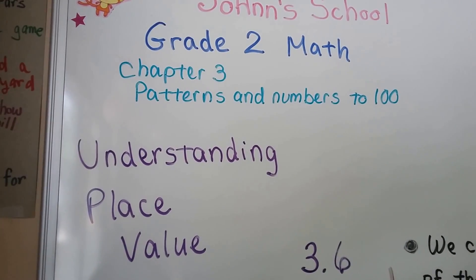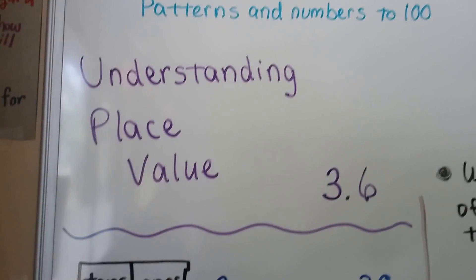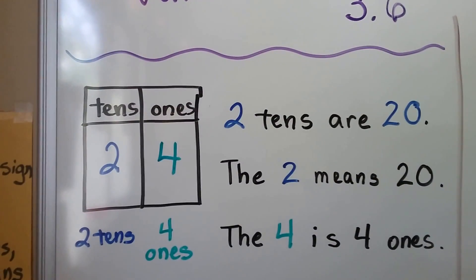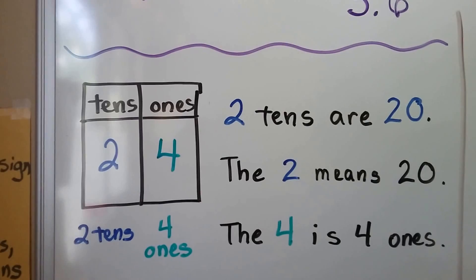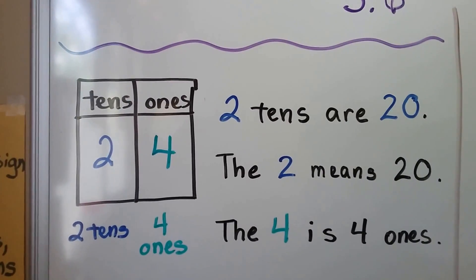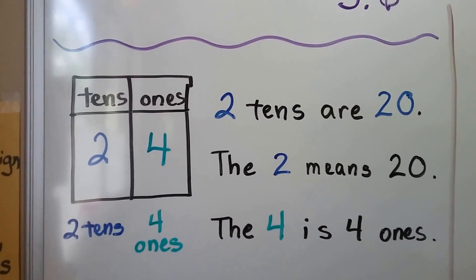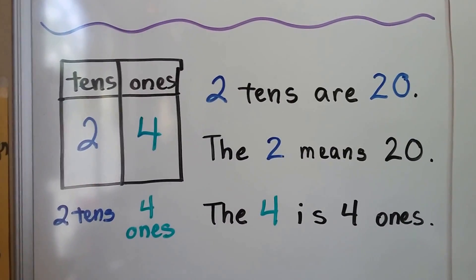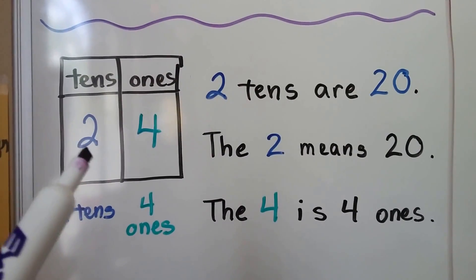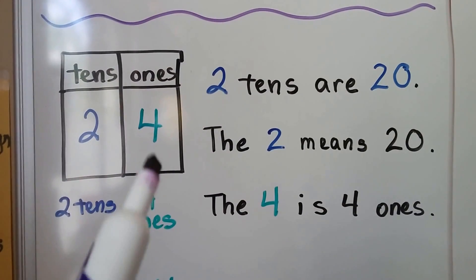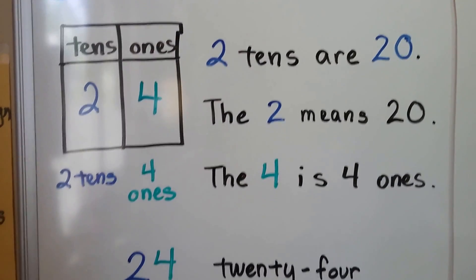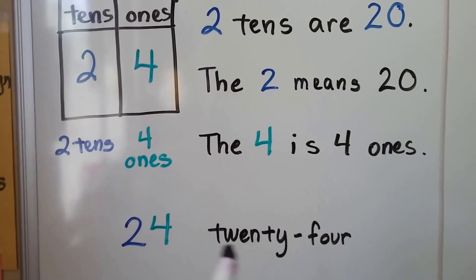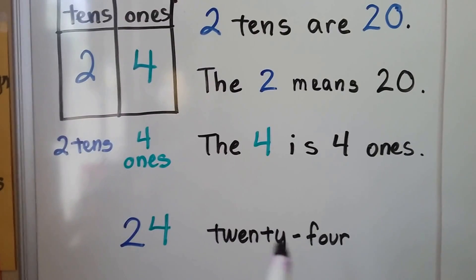Understanding place value, lesson 3.6. We've been working with this box with tens and ones in it. The two is two tens — that's twenty. The four is the ones; there's four ones. It's telling us that we have two tens and four ones. We have twenty-four. It's written like this when we spell it: twenty-four.